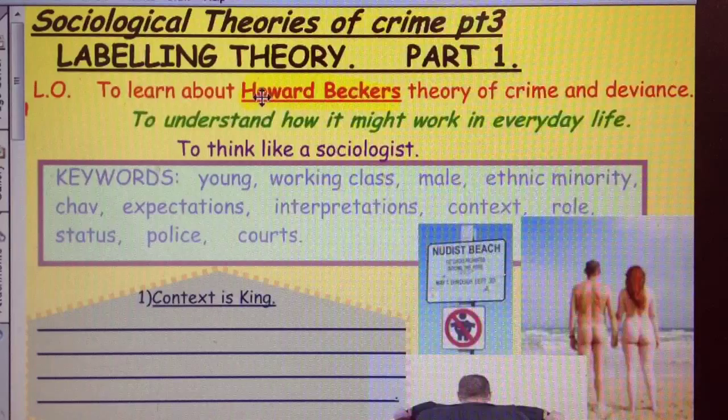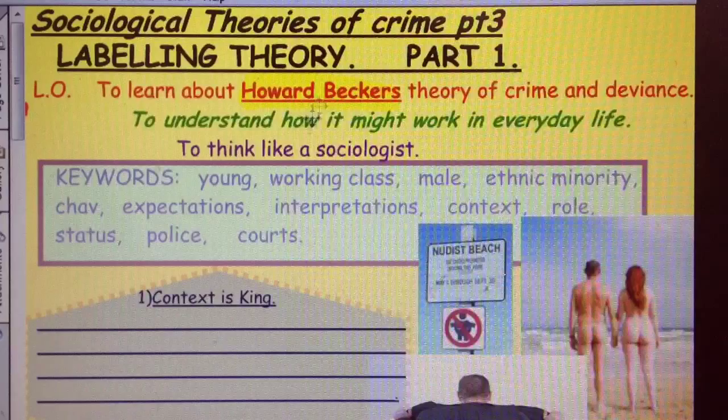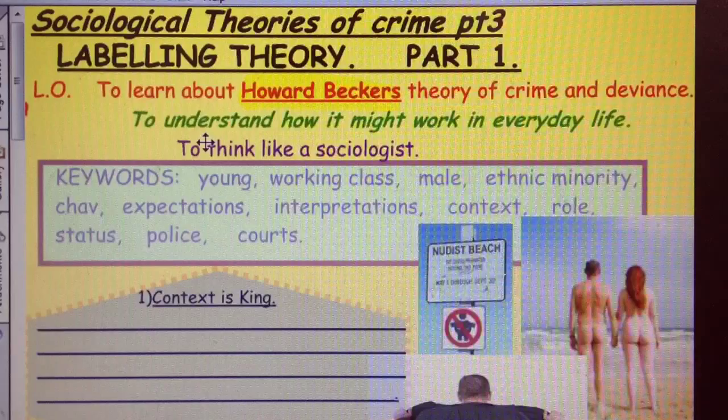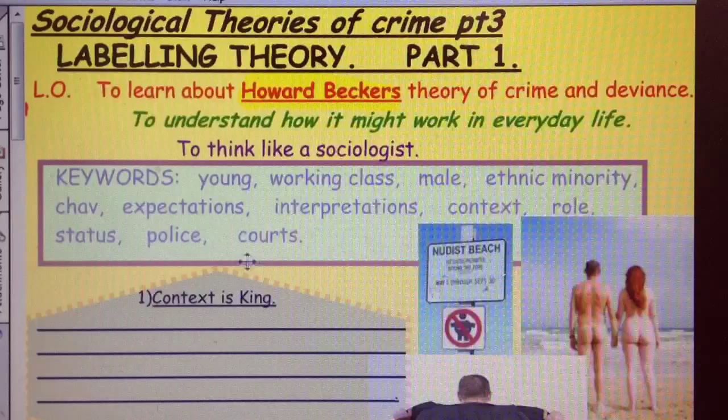So we're going to learn about Howard Becker's theory of crime and deviance. It's the name of the sociologist, Howard Becker. To understand how it might work in everyday life, by doing that, of course, you are thinking like a sociologist. You're going to apply this theory, labelling theory.